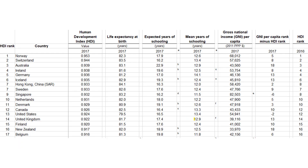Looking at the top countries in the world, there's not a whole lot of surprise as far as the states with the highest Human Development Index: Norway, Switzerland, Australia, Ireland, Germany, and the United States — down here at number 13 — still very high. This chart shows the top countries in the world with the highest HDI.